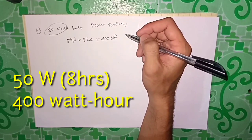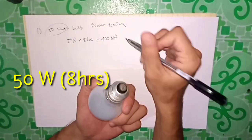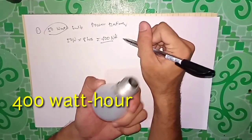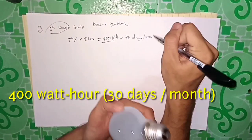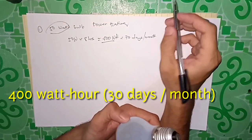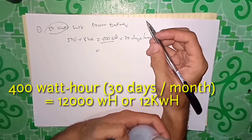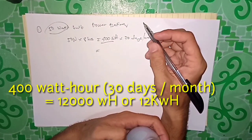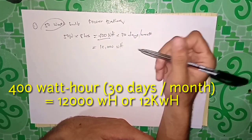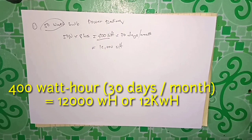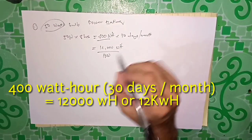What if you use it 8 hours a day for 1 month? Multiply the product by 30 days per month. So 400 times 30 is equal to 12,000 watt-hour. And that is...